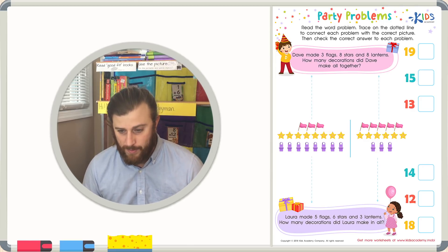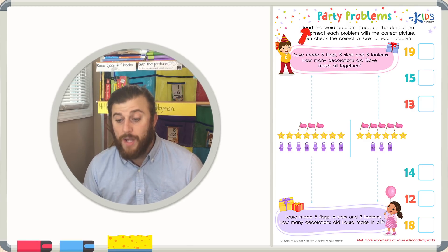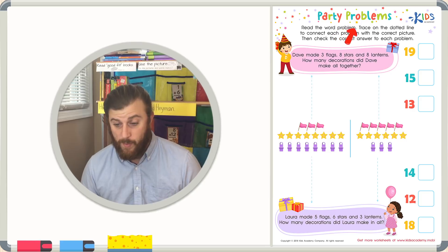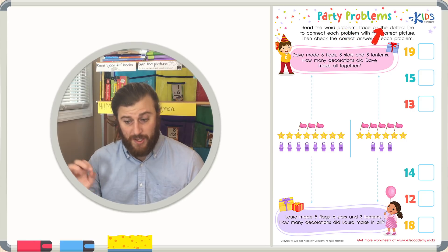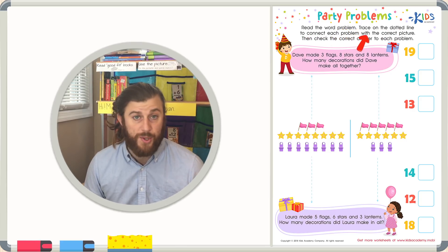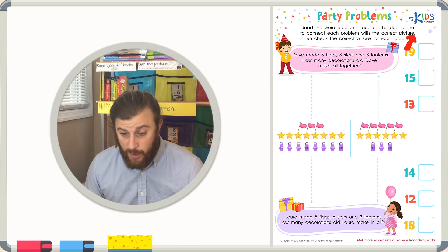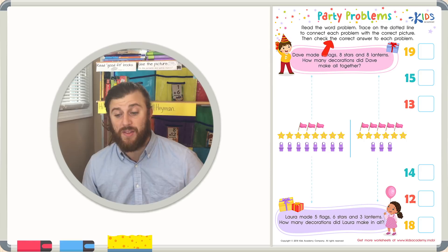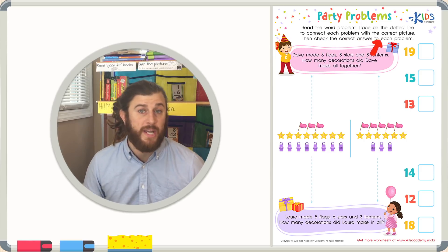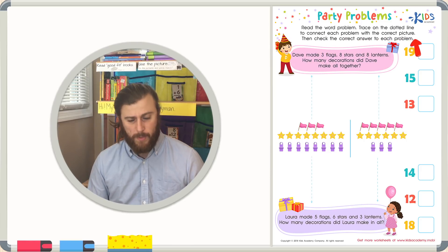Party Problems. Read the word problem. Trace on the dotted line to connect each problem with the correct picture. Then check the correct answer to each problem.